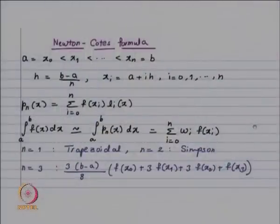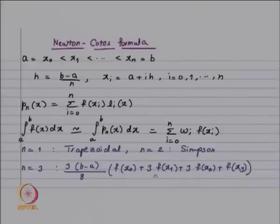The trapezoidal rule and Simpson's rule come under what are known as Newton-Cotes formulas. You have interval [a,b], subdivide it into n equal parts, consider these n+1 points, fit a polynomial of degree less than or equal to n, and you will get a formula — that is the Newton-Cotes formula. If you choose n=1 with the two end points, that gives the trapezoidal rule. If you choose n=2 with two end points and the midpoint, that gives Simpson's rule.